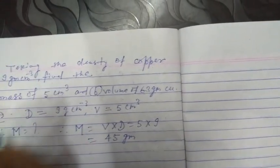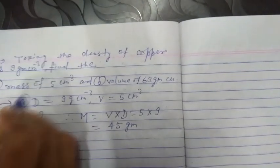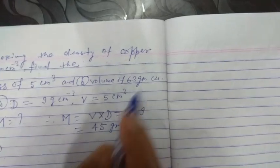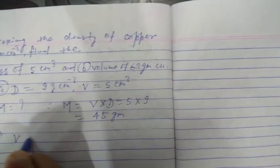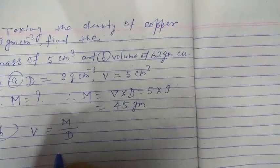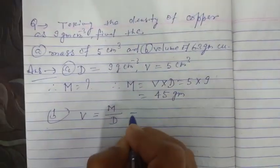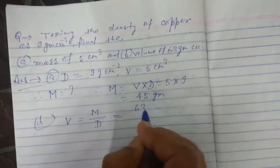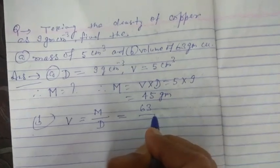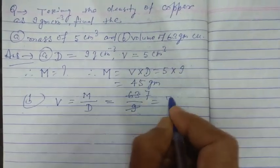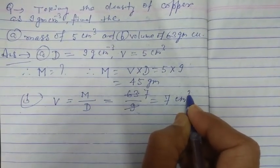This is part A. For part B, volume of 63 gram copper: V = M ÷ D = 63 ÷ 9 = 7 cm³.